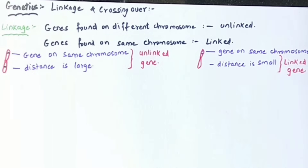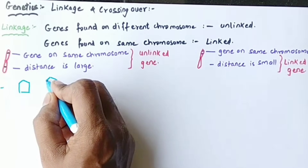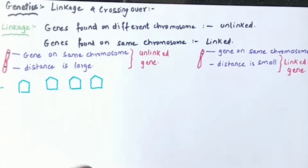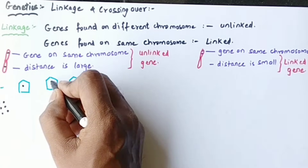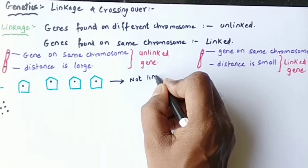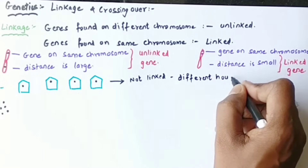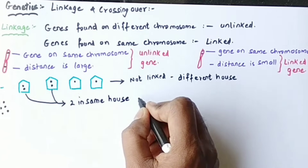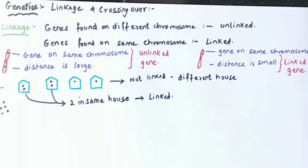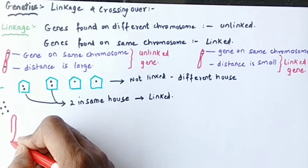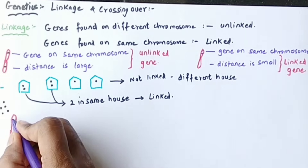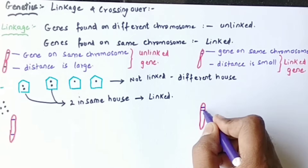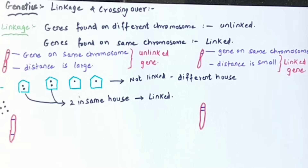To understand with an analogy: if two men are walking with a large gap between them, crossing over will take place, so those two men are not linked. But if they are very close to each other, they are linked. Similarly, in four different houses with one person each, they are far from each other and not linked at all. But if two men are placed together in the same house, they are linked. So linkage is purely dependent on distance between the two genes — the larger the distance, the greater the chance for crossing over and recombination, meaning less linkage.